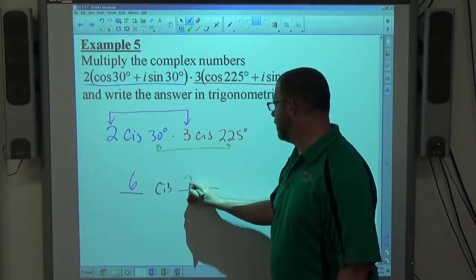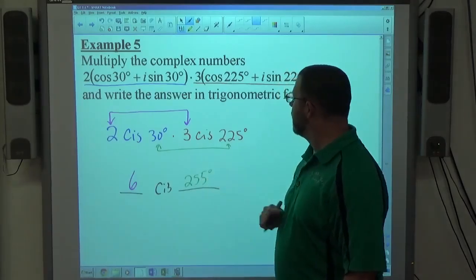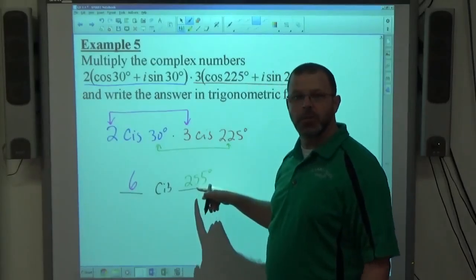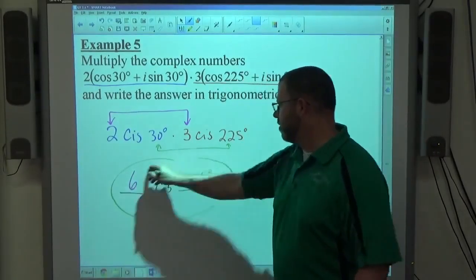30 plus 225 is 255. It says write the answer in trigonometric form, which is this. 255 is between zero and 360, so we're good to go.